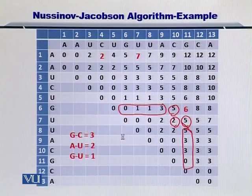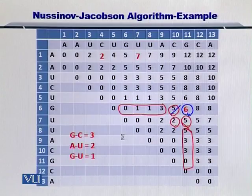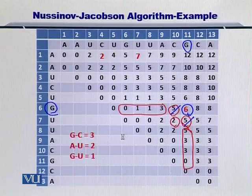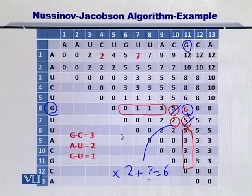As you see, in this case, the score is 6, which is neither coming from this position nor from this position. Neither is G and G coupled to give you 2 plus something equals 6. So this is also not true.